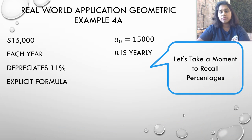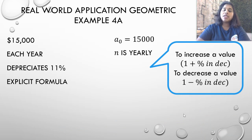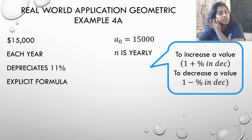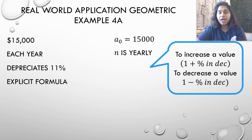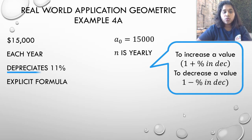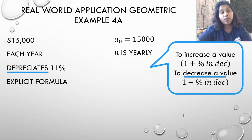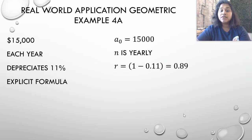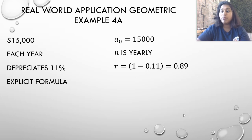To handle percentage changes correctly: if you increase a value, multiply by 1 plus the decimal percentage; if you decrease a value, multiply by 1 minus the decimal percentage. Since the car is depreciating, we subtract: 1 minus 0.11 equals 0.89. Multiplying by just 0.11 or 1.11 will give wrong answers — the correct common ratio r is 0.89.